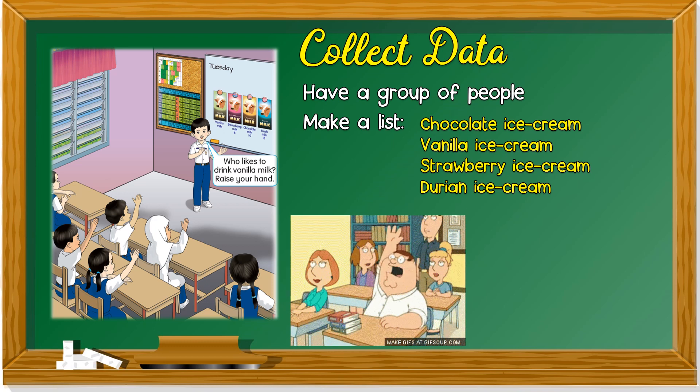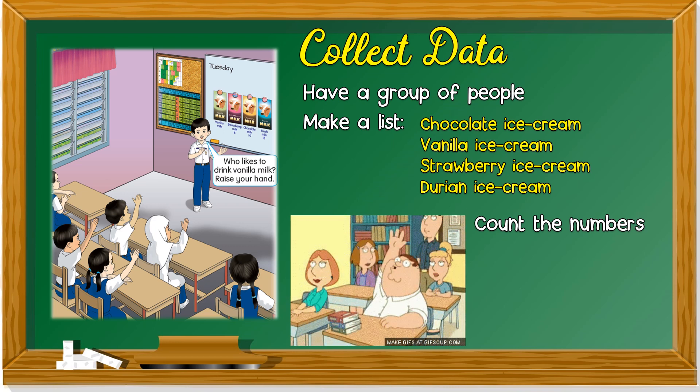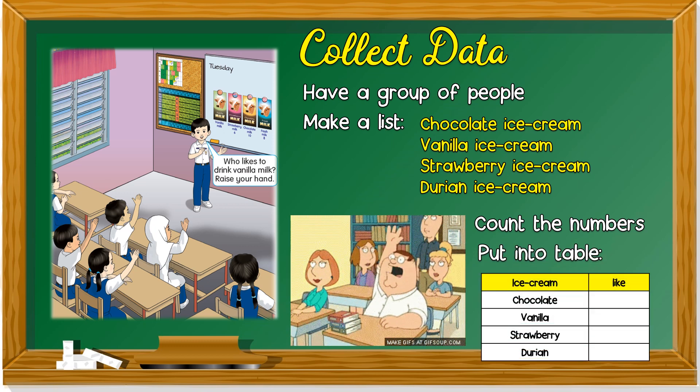Then, you need to count. How many like vanilla? How many like strawberry ice cream? And how many like durian ice cream? You need to ask one by one. Then, you have to count the numbers and put it into table like this.